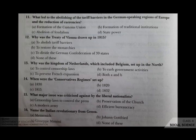The 16th question: name the Italian revolutionary from Genoa. Your options are A Metternich, B John Gottfried, C Giuseppe Mazzini, D none of these. The correct answer is C, Giuseppe Mazzini.